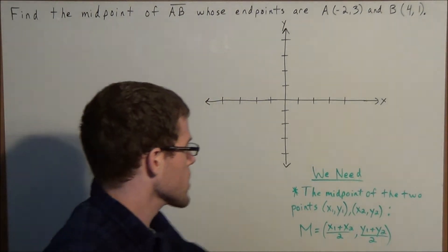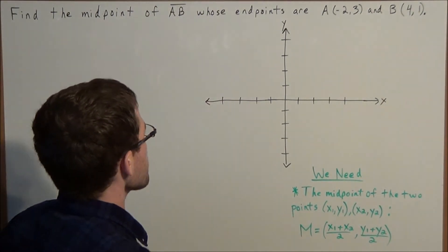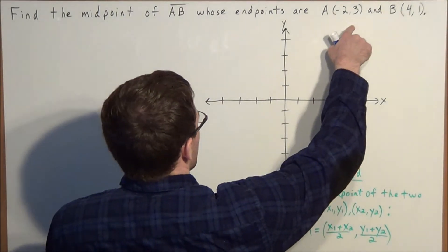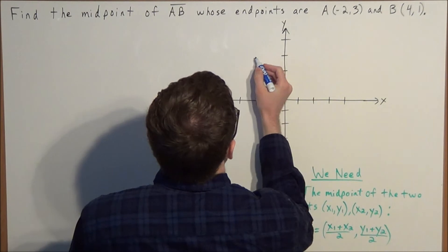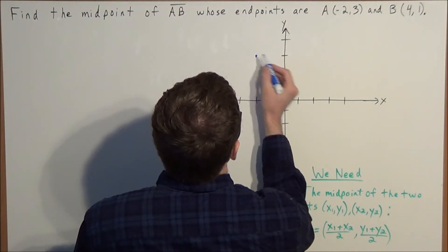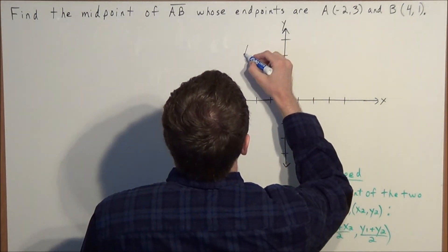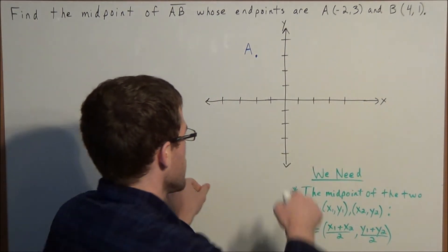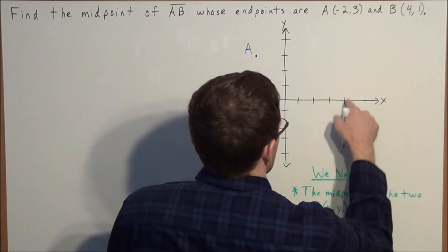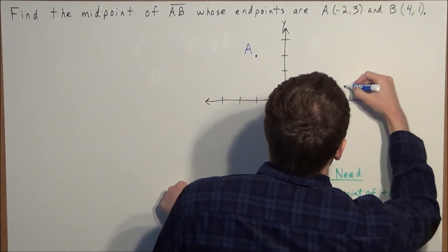So we're looking at the Cartesian plane and we're looking at the point (-2, 3). So we can plot this point (-2, 3) and we can label it A. Next we can plot the point (4, 1) and we can label this point B.